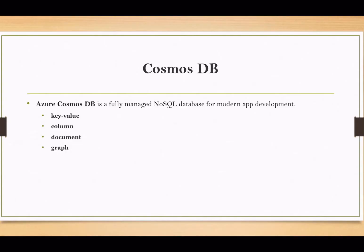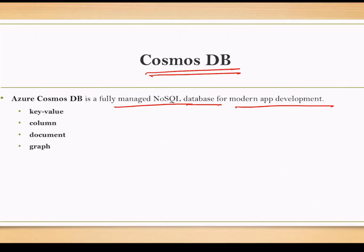Now we will talk about some database services. First we have Azure Cosmos DB. Azure Cosmos DB is a fully managed NoSQL database for modern app development. There are two kinds of databases — relational and non-relational. Cosmos DB is a NoSQL database, which means it is not relational.